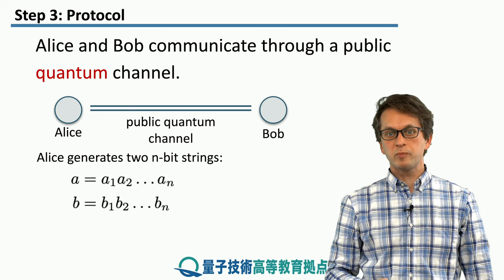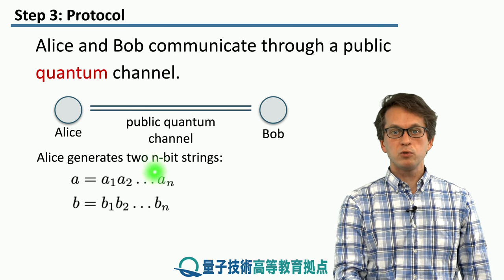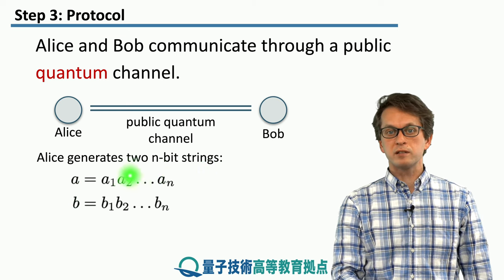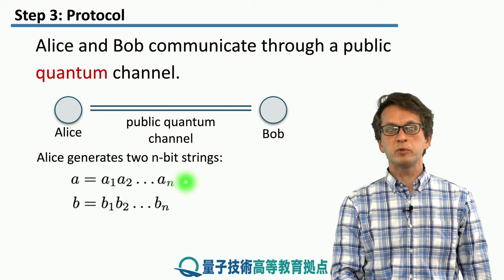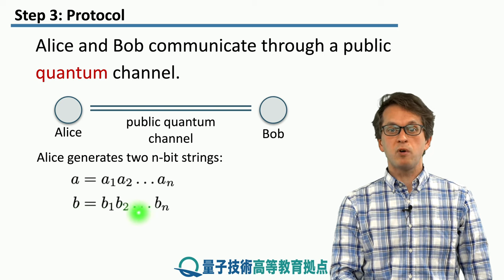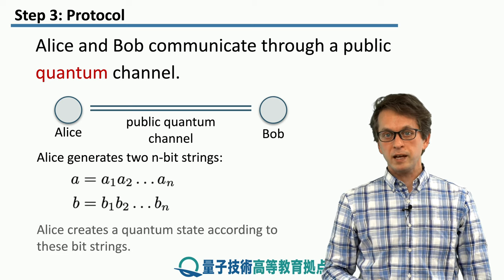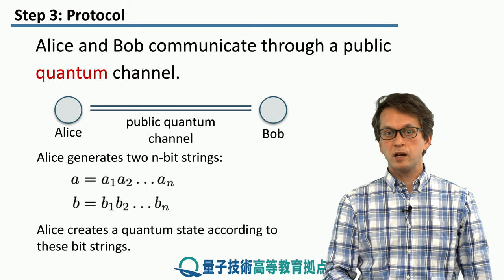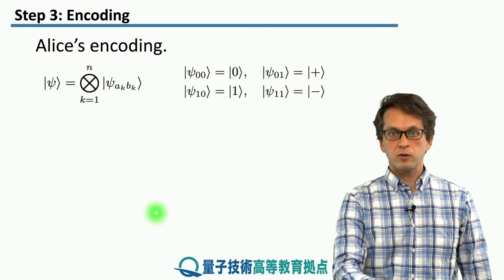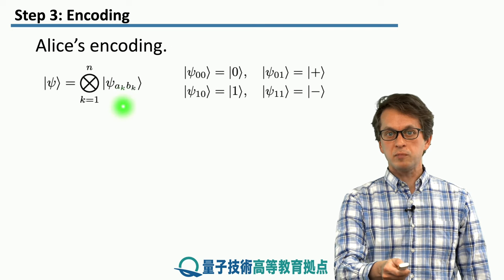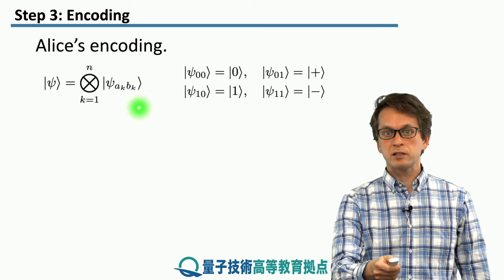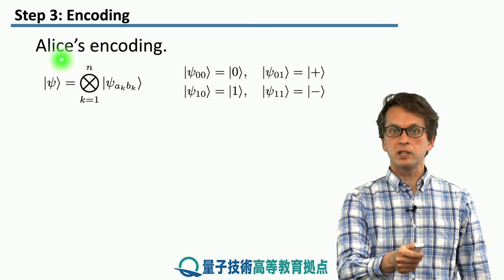What Alice does to begin the protocol is she generates two n-bit strings. We're going to call the first n-bit string A, so there are n bits: A1, A2, up to An. The second bit string we denote as B, with bits B1, B2, all the way up to Bn. She then creates quantum states according to these bit strings — for each two bits from A and B she creates one qubit, making n such qubits, and the whole state is denoted by psi.